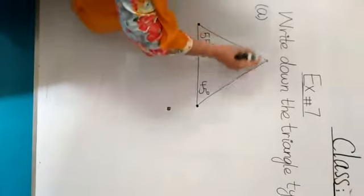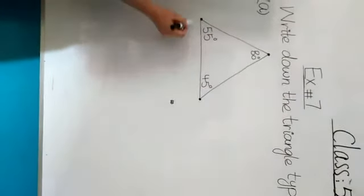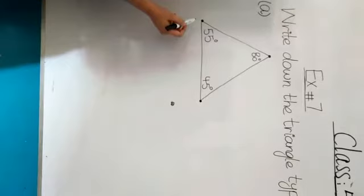So let's start exercise 7. Exercise 7, write down the triangle type. So it has 3 sides, it is a triangle. We have to see which type it is.